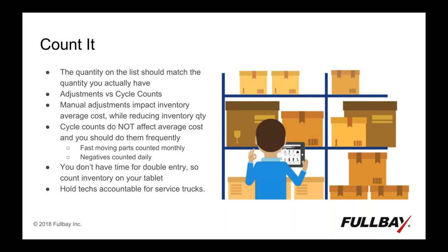If you know where your inventory is, you should count it. I'm a big advocate of cycle counting — that's where you find your problems. In Full Bay there's a difference between a cycle count and an adjustment. Cycle counting is going out and physically counting inventory, and it changes the financial value of your inventory asset account — but those transactions don't affect average cost. Manual adjustments, however, do impact inventory average cost. If you go into Full Bay and change a quantity from 10 to 20, the system will re-average the cost across all stock on hand.